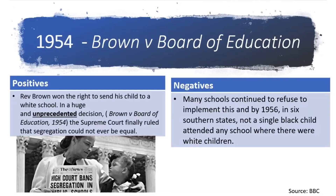Now we come on to the main events of the civil rights movement. In 1954, the Supreme Court finally ruled that segregation could never be equal. Reverend Brown was now able to send his daughter to a white school, which was closer to where they lived. Unfortunately, change was minimal. By 1956, in six southern states, not a single black child went to school with a white child.